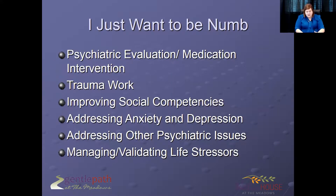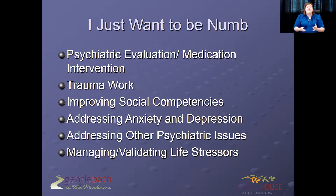If someone is just wanting to numb out — the underlying etiology stuff — you might want a good psychiatric evaluation and medication intervention if people are numbing out their anxiety or depression. You want to have good trauma work; if they have a classic addiction profile, they probably have some trauma that needs to be resolved. Improving social competency — young adults who struggle with being functional adults need a little help overcoming their fears, addressing anxiety, depression, and any other underlying psychological or psychiatric issues. And validating life stressors — it's hard to be a young adult.